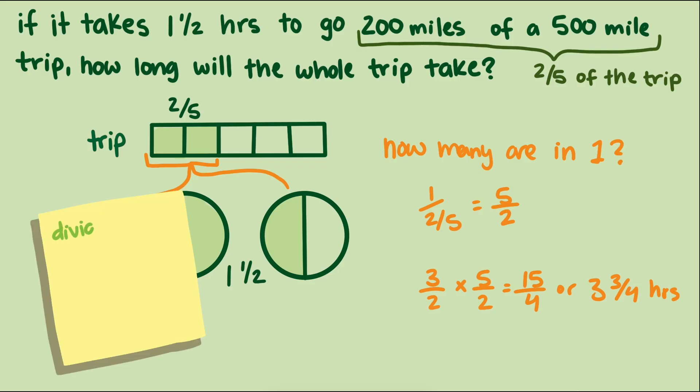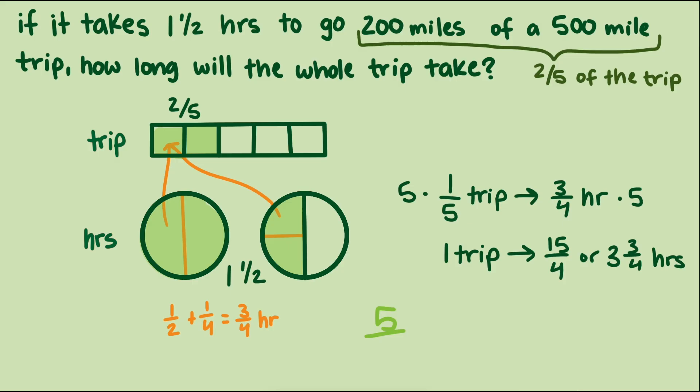Did you ever learn that popular rhyme in elementary school, dividing fractions as easy as pi, flip the second and multiply? Well, now we can see why multiplying by the reciprocal works. In our first approach, we're scaling down to a rate for a unit fraction by dividing by the numerator, and then scaling up to find the whole by multiplying by the denominator, which represents how many unit fractions are needed to make a whole.